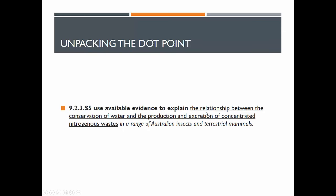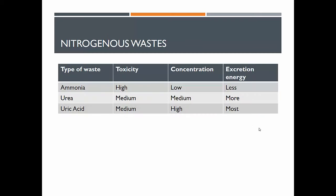What we are looking for is a relationship between the conservation of water and the production and excretion of concentrated nitrogenous wastes, in the context of Australian insects and terrestrial mammals. There are three main nitrogenous wastes: ammonia, urea, and uric acid. They have different toxicity concentrations and excretion energy requirements. Generally, we are looking for nitrogenous wastes that have a low excretion energy and a high concentration — those are the two features that will stand out for insects and mammals today.